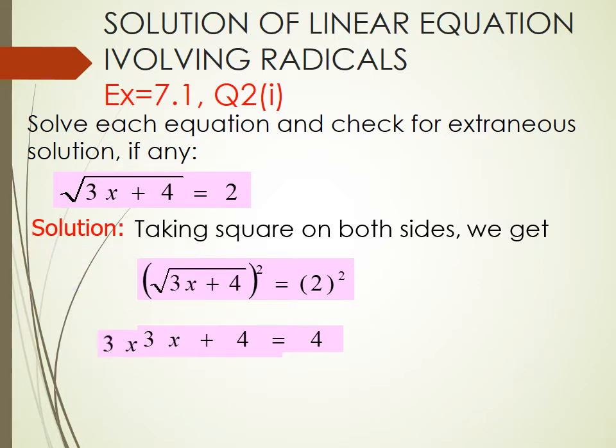When 4 shifts to the other side, it becomes 3x equal to 4 minus 4, and 3x equal to 0. When we divide 3 with 0, we get x equals to 0.